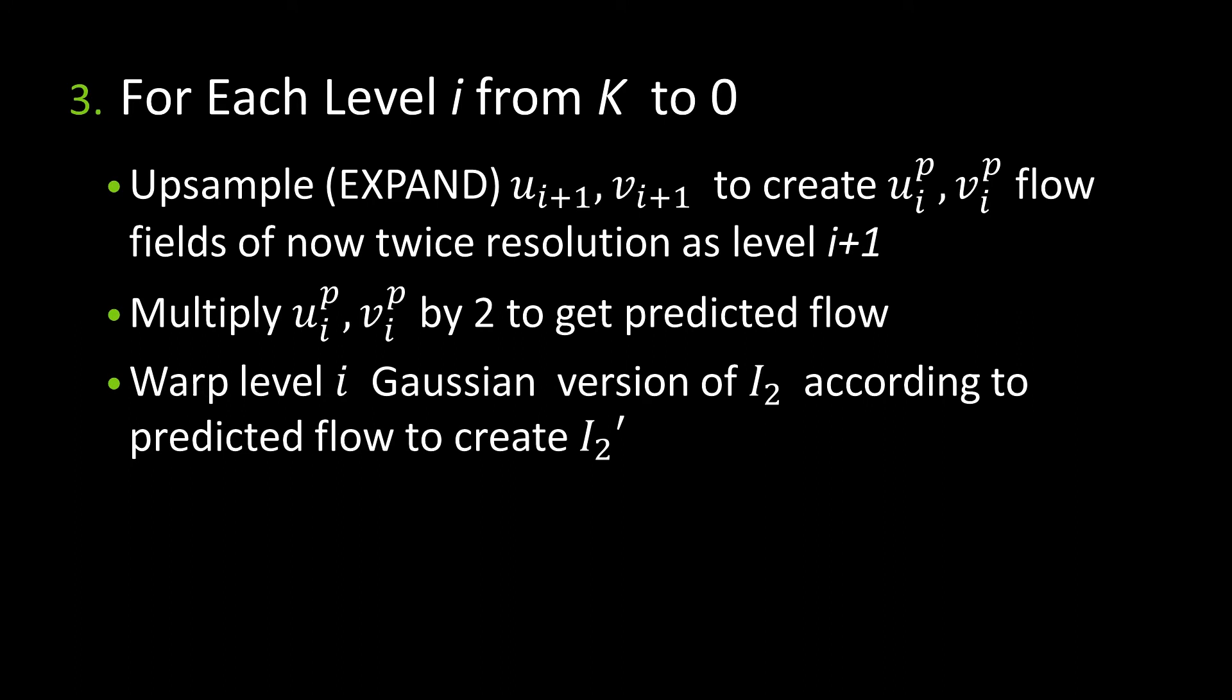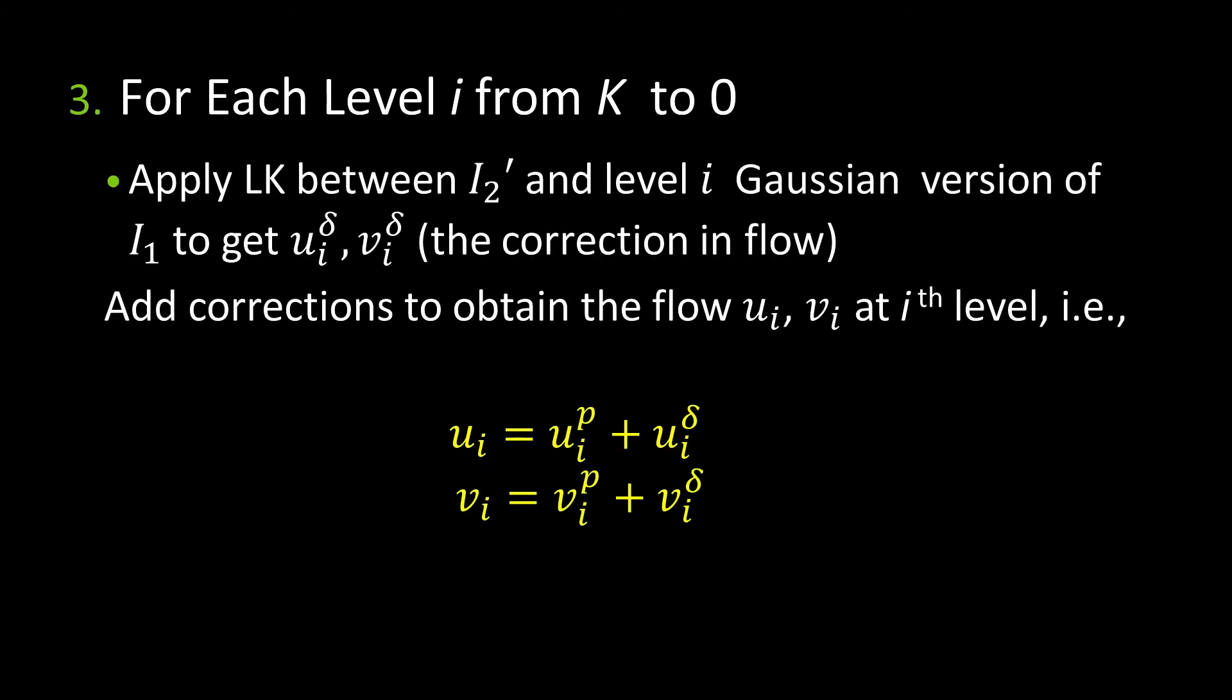And then you warp that level of the Gaussian of image 2 towards image 1 in order to get 2 prime or t minus 1 to t. Whether you call it 1 or 2 doesn't matter. And you just keep iterating. And then we apply Lucas-Kanade again between the warped version and that same level of I1 to get this slight, what's called the correction flow. And we have to add that correction flow back to the expanded flow that we had before. That's what these equations here are doing. They're adding that slight difference that we now found back to the original predicted flow.